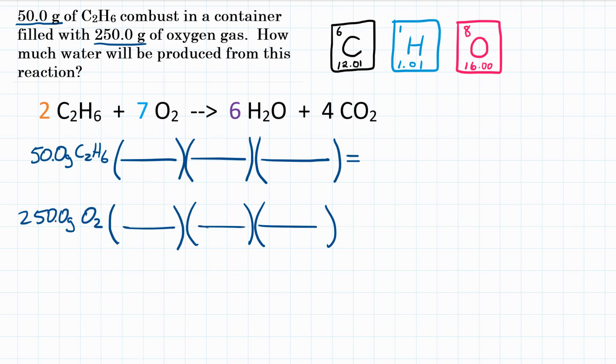Okay, and we will calculate each of these and whichever is less is what we actually get. So the first one, 50 grams of C2H6. We can convert our grams of C2H6 into moles of C2H6. For every one mole of C2H6, how many grams is that? Well, we have to calculate the molar mass for C2H6.